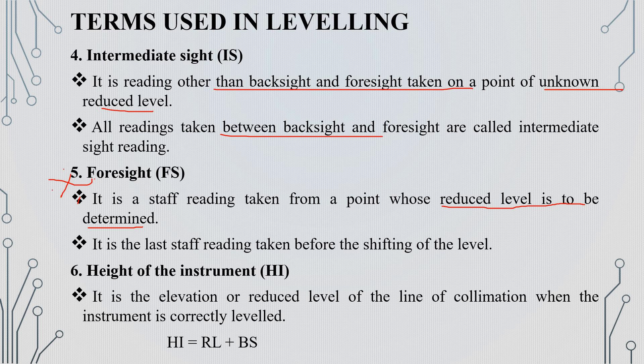The foresight is the last staff reading taken before the shifting of a level. The next one is the Height of the Instrument. It is the elevation or reduced level of the line of collimation when the instrument is correctly leveled. The height of the instrument H is equal to the reduced level plus backsight.